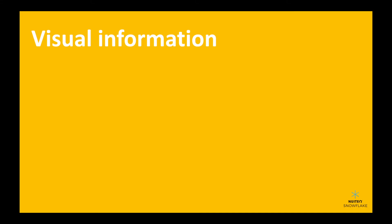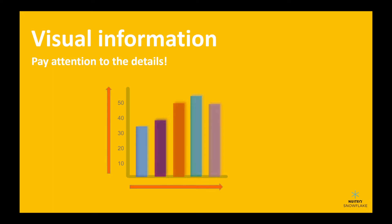Let's start with visual information, which can be anything from charts and graphs to photographs and videos. Visual information is everywhere. When we look at visual information, we need to pay attention to the details. For example, if we're looking at a bar graph, we need to look at the x and y-axis to understand what's being measured and how much of it there is.